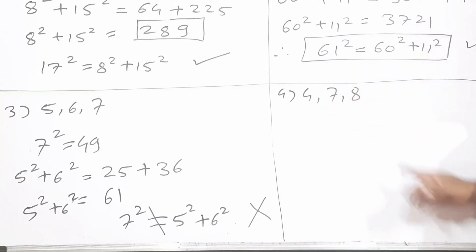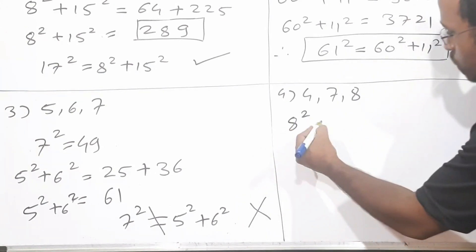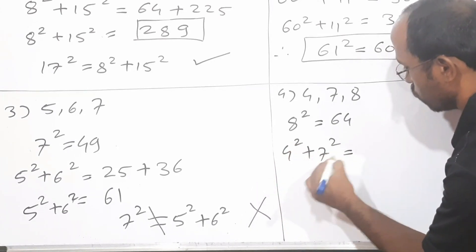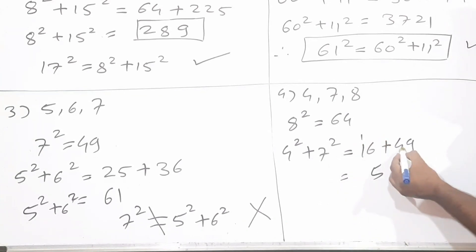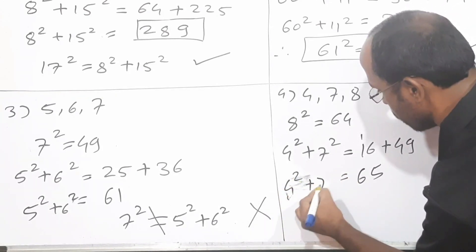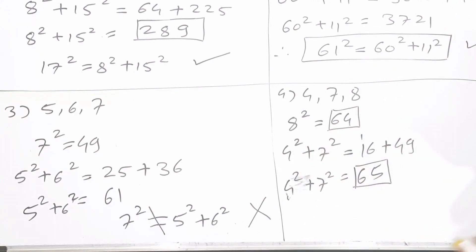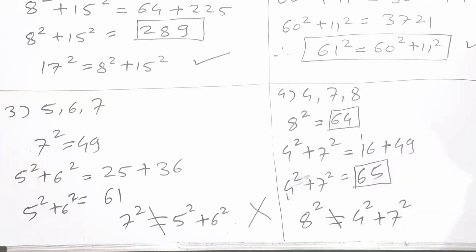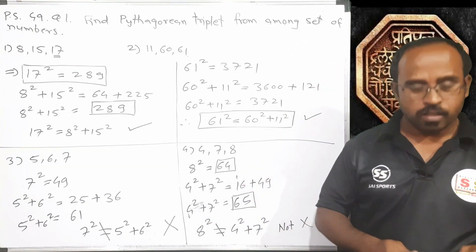Consider the numbers 4, 7, 8 — are they a Pythagorean triplet? Find the square of the biggest number: 8 squared equals 64. Find the addition of the squares of the smaller numbers: 4 squared plus 7 squared equals 16 plus 49 equals 65. Since 64 does not equal 65, we say 8 squared is not equal to 4 squared plus 7 squared. Therefore it is not a Pythagorean triplet. I hope you understood — how easy this lesson is! Thank you very much for watching the video till the end.